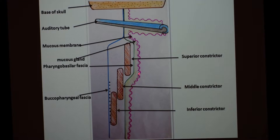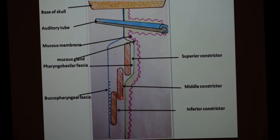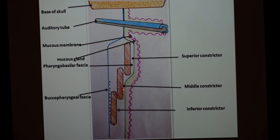Just inside the mucosa there will be mucous glands, which secrete mucus. The second layer, seen as a green lining in the diagram, is the pharyngobasilar fascia, which is in fact a thickening of the submucosa. This pharyngobasilar fascia is marked in the upper part of the pharynx.